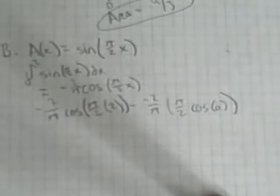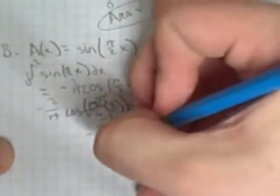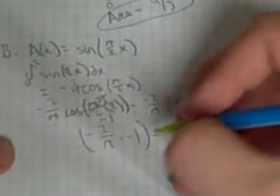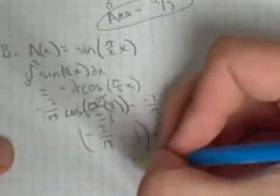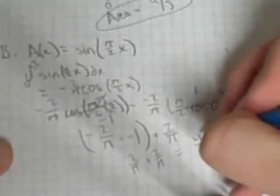Cosine of (0 · π/2) evaluates to 1. Then cosine of (π/2 · 2) simplifies to cosine of π, because the 2s cancel, which equals negative 1. So we have negative (2/π) times negative 1, minus negative (2/π) times 1, which is negative (2/π). That gives us 2/π plus 2/π, and the volume equals 4/π.